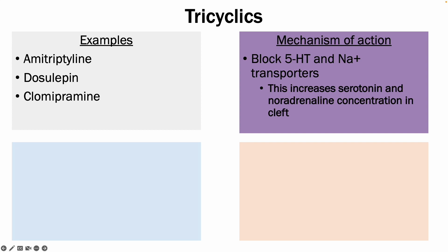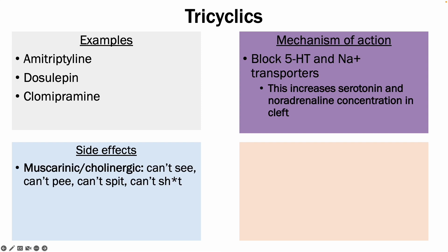There are some side effects which you should be aware of, which can often come up in exams. The main muscarinic and cholinergic side effects can be remembered using the mnemonic: can't see, can't pee, can't spit, and can't shit — meaning patients can have blurry vision, urinary retention, dry mouth, and constipation.